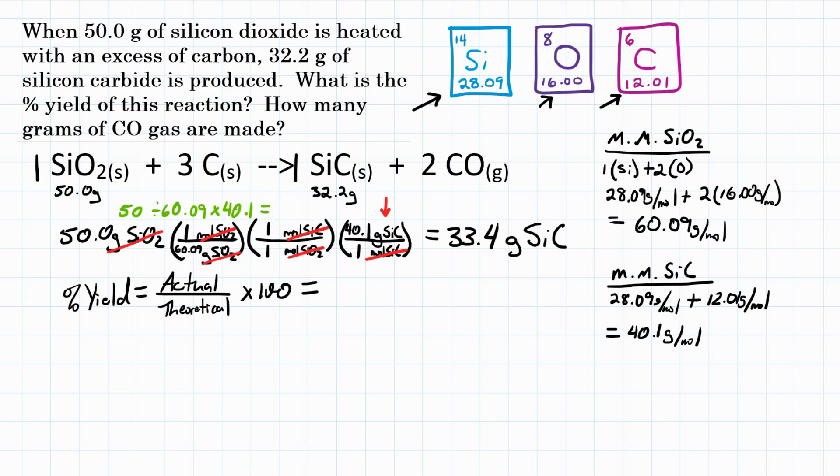So judging from the 50 grams of SiO2, we calculated we could get 33.4 grams of SiC. But the problem says you didn't actually get that much. You only got 32.2. So we want to calculate the percent yield, and that is down here where it says percent yield equals actual over theoretical, and then we times by 100 to get that to a percent. The actual is what in real life you actually got, what you experimentally got in the lab. It says we got 32.2 grams in the lab, in real life, and we're going to divide that by what we calculated we could get, 33.4. That's the max. That would be 100 percent yield if we got 33.4 grams. So we divide those two, multiply by 100, and we get percent yield of about 96.4 percent.